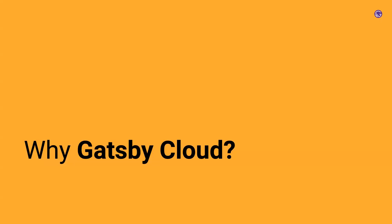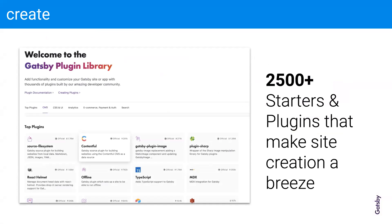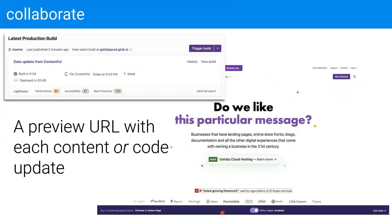So why Gatsby Cloud? We'll talk about this in a framework of four things today: Creation, Collaboration, delivering the website, and an organization post. Gatsby Cloud has 2,500 plugins and a set of integrations from CMSs that you can automatically hook in through Gatsby Cloud. It's going to allow you to automatically connect to your VCS of choice and even fire up websites quickly from templates.